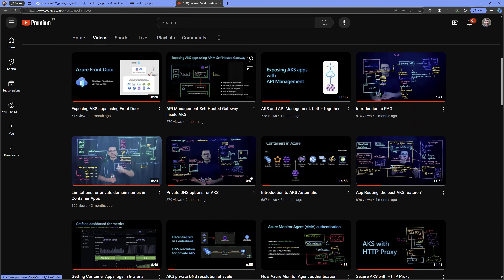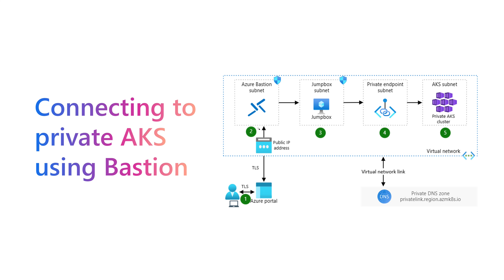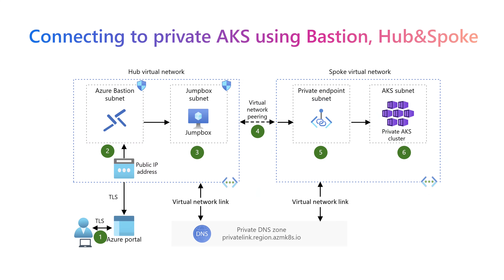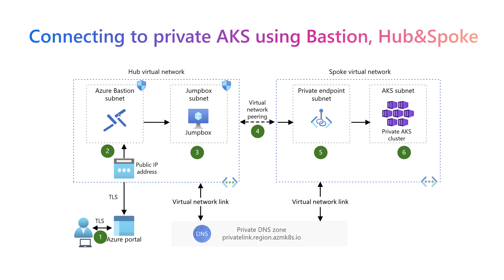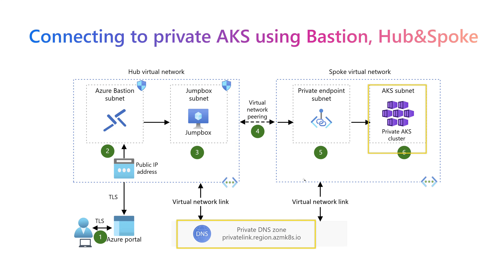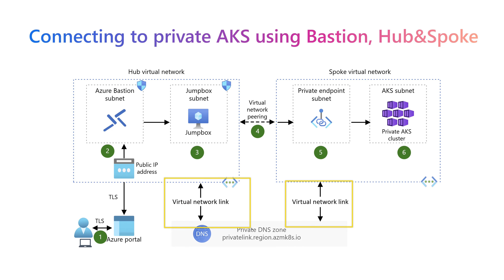In this demonstration we've seen how to access an AKS cluster through Azure Bastion, an Azure VM jump box, and a private endpoint — all within one single virtual network. For enterprises using a hub-and-spoke networking model, Azure Bastion can live in a hub virtual network while the AKS cluster lives in a spoke virtual network connected via VNet peering. Just make sure the private DNS zone is attached not only to the spoke virtual network but also to the hub virtual network.